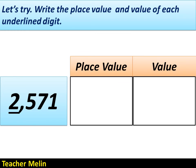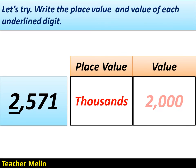The next number is 2,571. The underlined digit is number 2. What is the place value of 2? The correct answer is thousands. And what is the value of 2? The answer is 2,000.